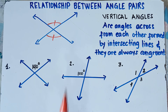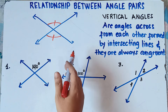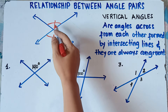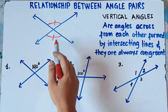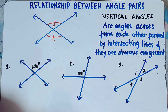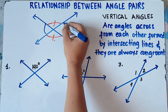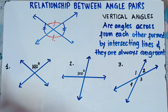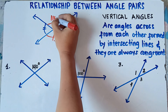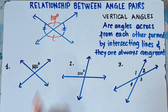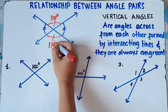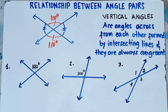Once again, vertical angles are formed by two intersecting lines, and they're always congruent. Opposite angles are congruent. This angle is congruent to this angle, and therefore this angle will be congruent to this angle. So if this is 110 degrees, the measure of the opposite angle is also 110 degrees, because vertical angles are congruent.